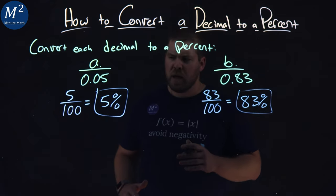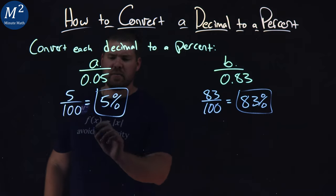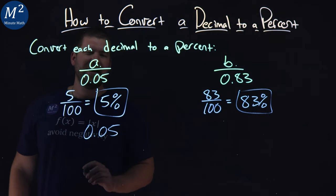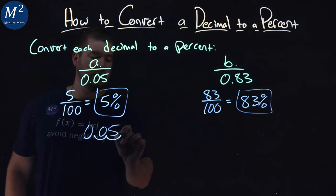Not too bad. The other way we can do this is take the decimal, 0.05, and we just have to move it two spots to the right. 1, 2. And we have a 5 left over. Decimal's going to be here. Percent.